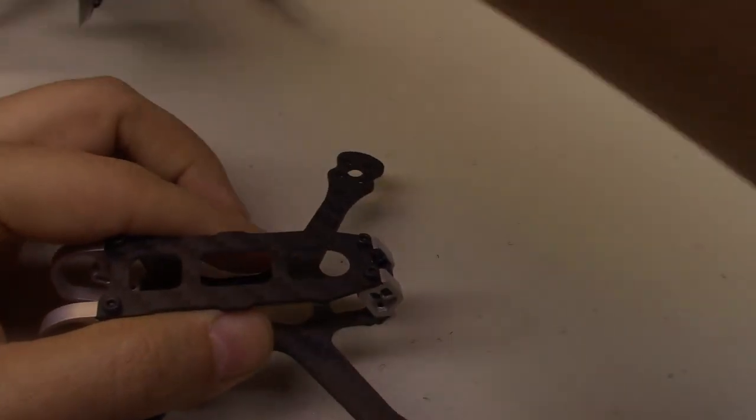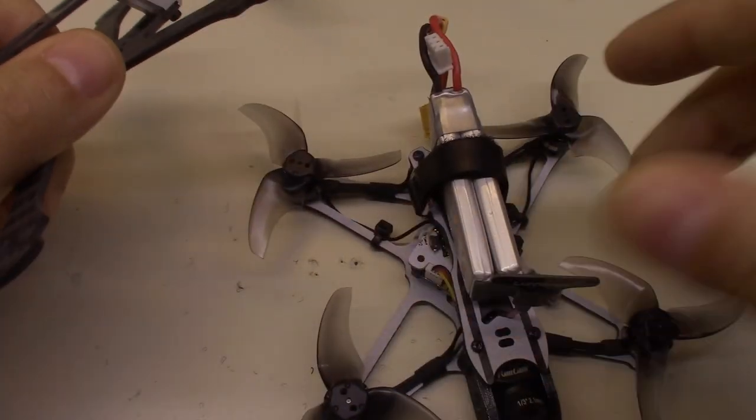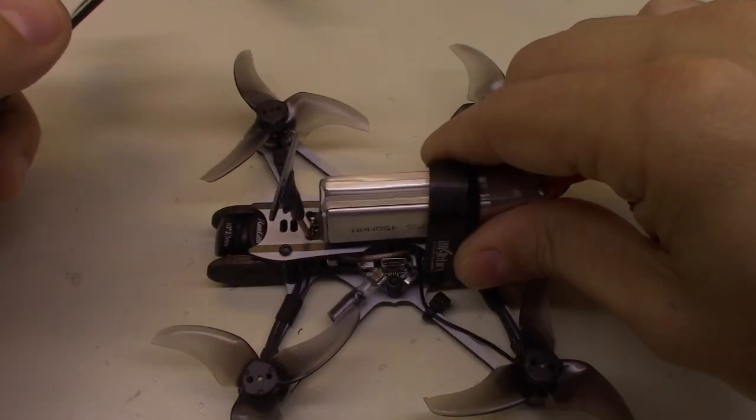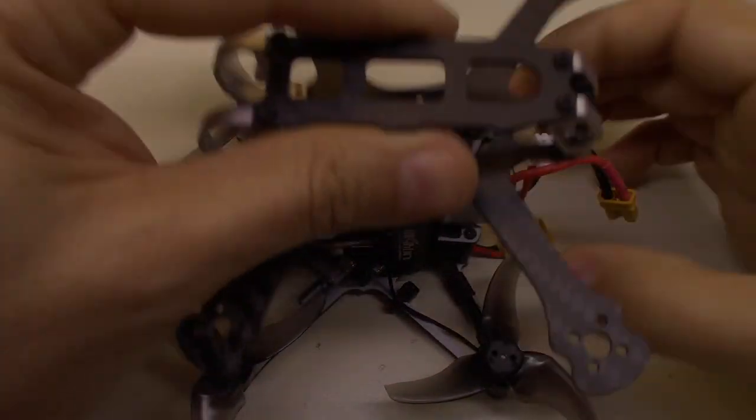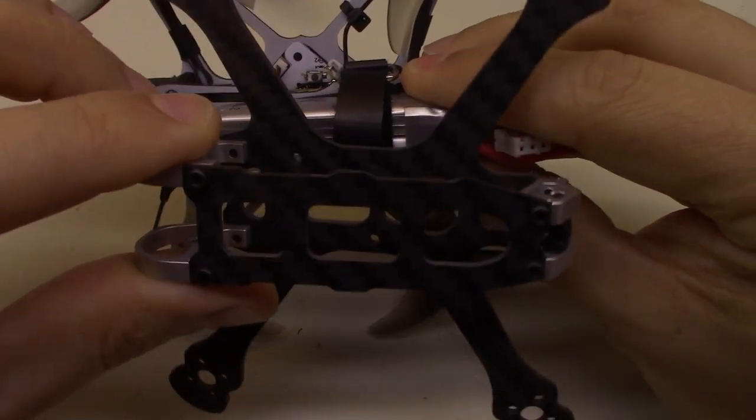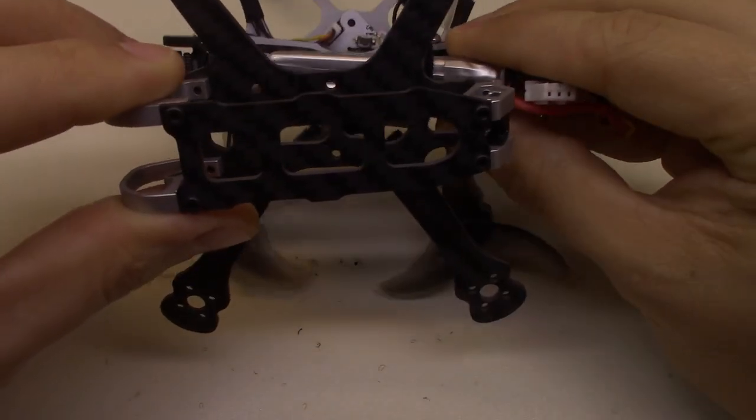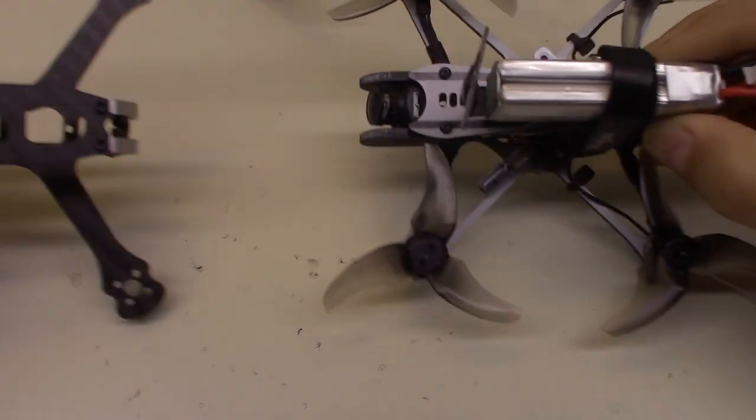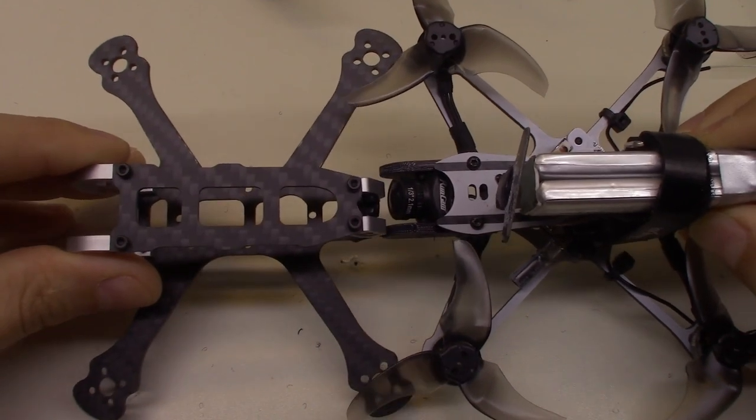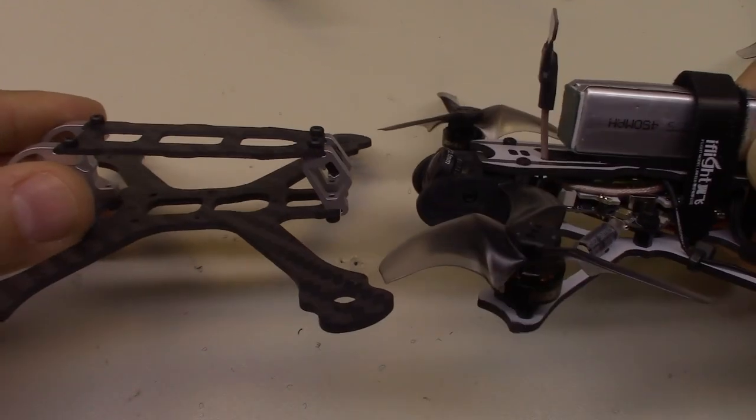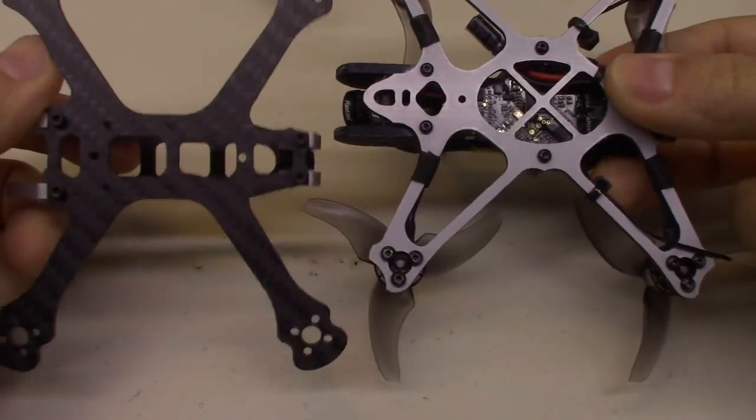And just as a size comparison real quick, because it may be kind of hard to tell. Here is my Tiny Hawk Freestyle. You can see that the frame size is very similar between the two. So that's basically what you're going to be getting. Basically, a Tiny Hawk Freestyle size frame.